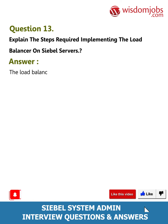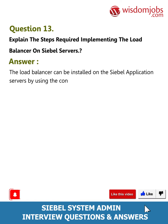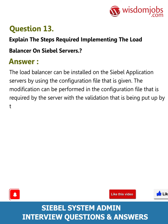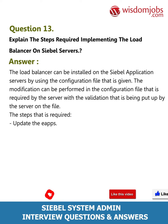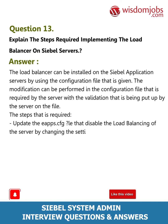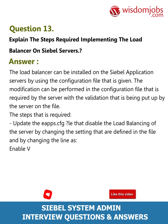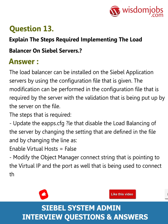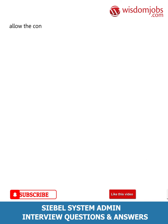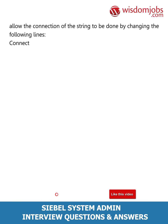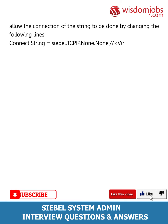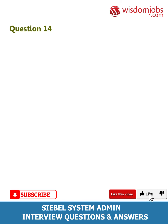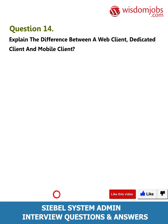Question 13: Explain the steps required for implementing the load balancer on Siebel servers. Answer: The load balancer can be installed on the Siebel application servers using the configuration file. The steps required are: update the eapps.cfg file to disable load balancing by changing the setting to 'EnableVirtualHosts=false'; modify the object manager connect string to point to the virtual IP and port used to connect the load-balanced object manager components; and allow the connection string by changing the following line: ConnectString=siebel.dcp://none.none://virtualIP:virtualPort/SiebelEnterpriseName.